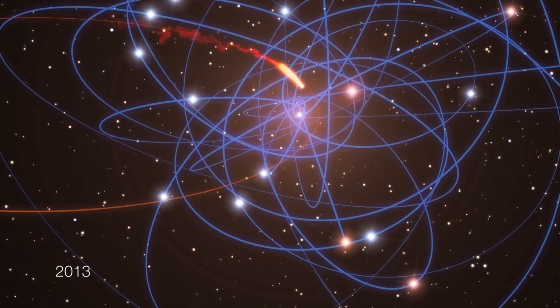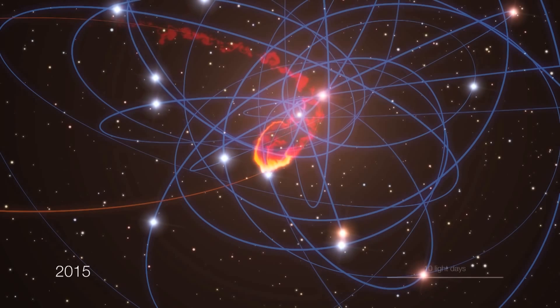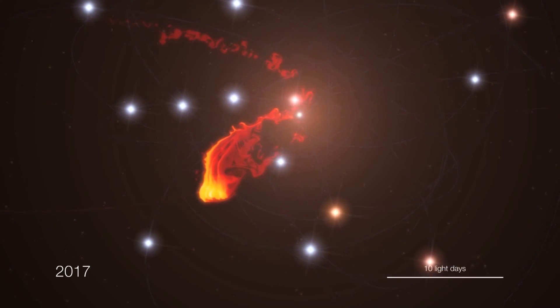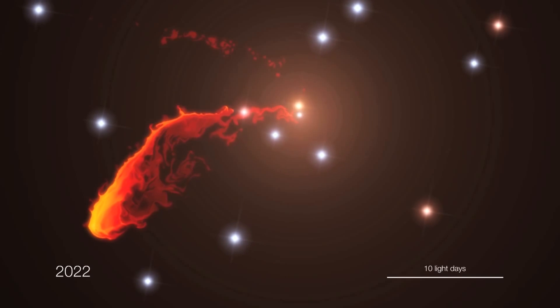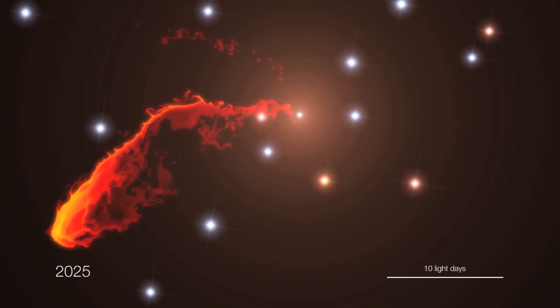No one knows what will happen next. The cloud will probably heat up and may start to emit powerful X-rays as it gets disrupted. In the end, the material will eventually disappear by falling into the black hole.